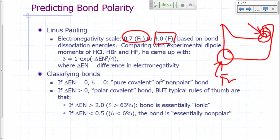He based those values on bond dissociation energies, and he compared the bond dissociation energies with the experimental dipole moment of HCl, HBr, and HF, and he came up with a formula that relates the partial ionic character, the ionic character of a bond to the difference between electronegativities. So delta EN right here is the difference in the electronegativity between two atoms that are in a bond.